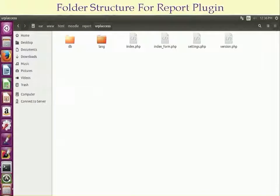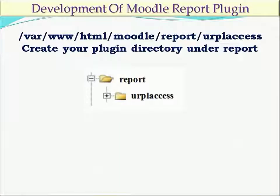Then for the folder structure of the report plugin: I want to create a report plugin, so I go to the webroot. The webroot for Ubuntu 16.04 is /var/www/html/moodle — this is the already existing folder in Moodle after successful installation. Then you create your folder, which is your plugin name, under the report directory. Here my plugin name is urplaccess, so I create the directory urplaccess under the report folder, i.e., report/urplaccess under webroot. The webroot path differs per operating system.